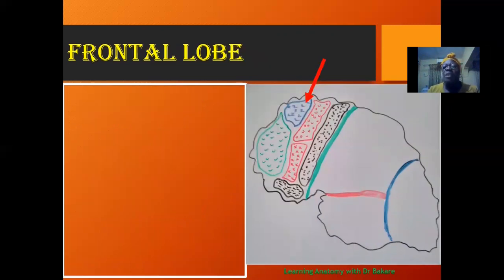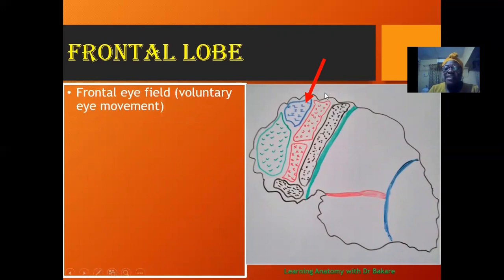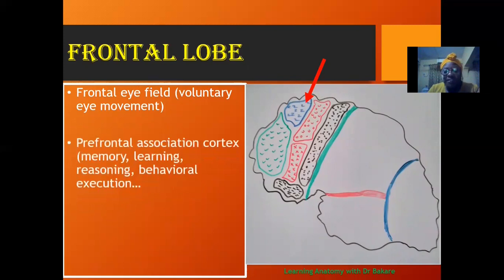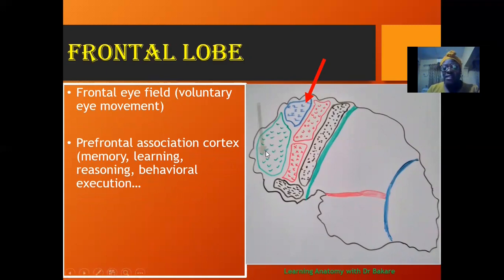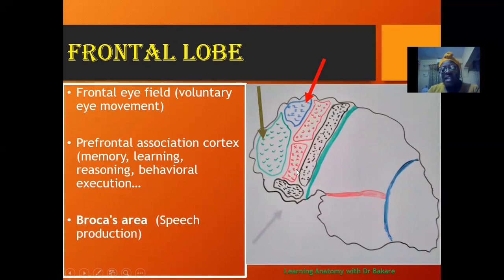On the frontal lobe, we also have the frontal eye field, located anterior to the motor association area, which controls eye movement. More inferior is the prefrontal association cortex, which helps in memory, learning, reasoning, and behavioral execution. More inferior still is Broca's area, which is responsible for speech production. This is the entire functional distribution of the frontal lobe of the cerebral cortex.